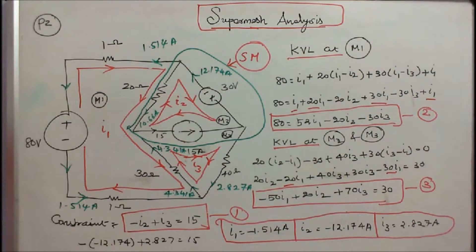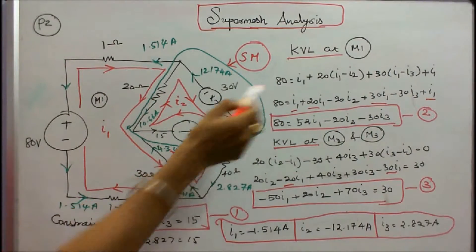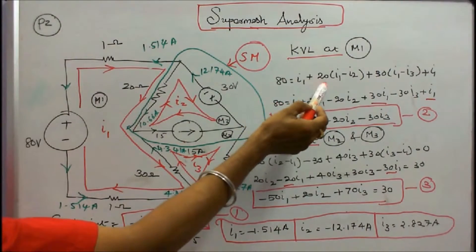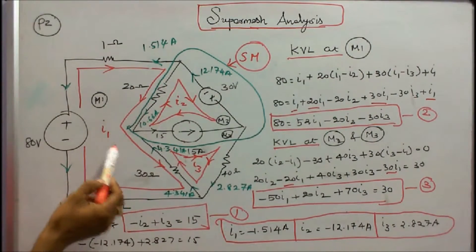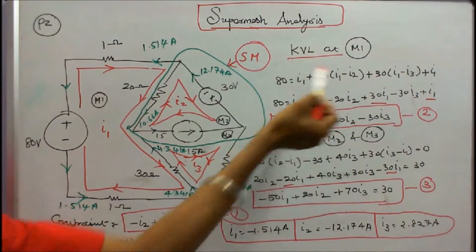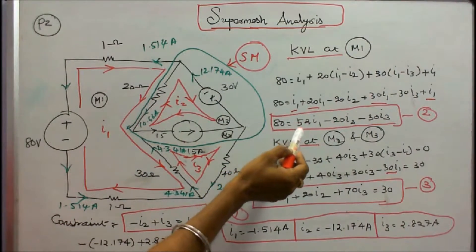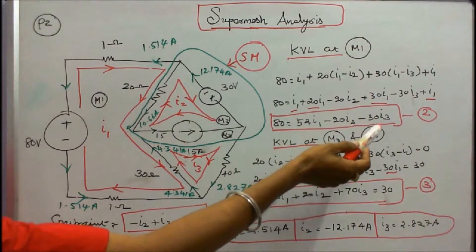Now I apply Kirchhoff's voltage law at M1. The voltage is 80: 80 is equal to 1 into I1 plus 20 into (I1 minus I2) plus 30 into (I1 minus I3) plus 1 into I1. Simplifying, 80 is equal to 52 I1 minus 20 I2 minus 30 I3. This is equation 2.